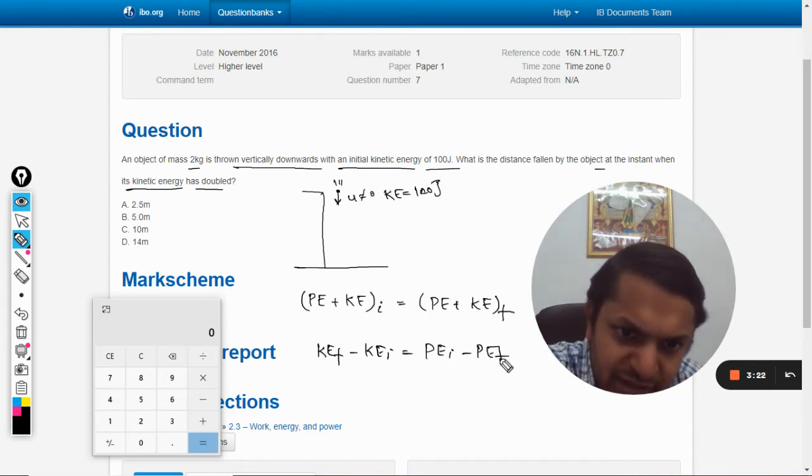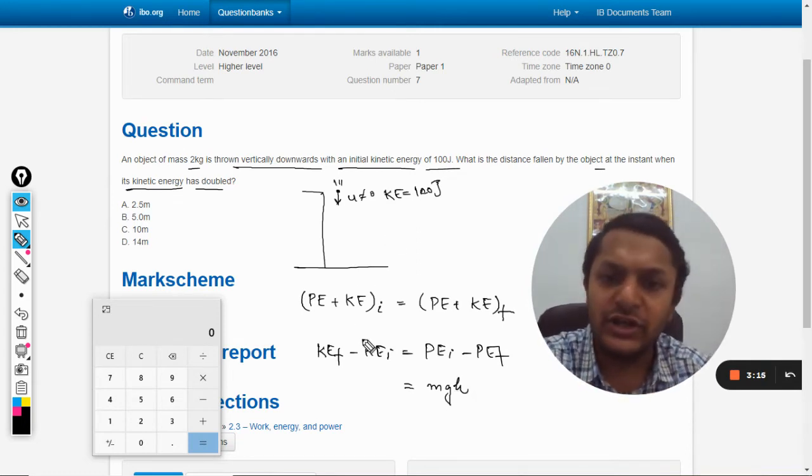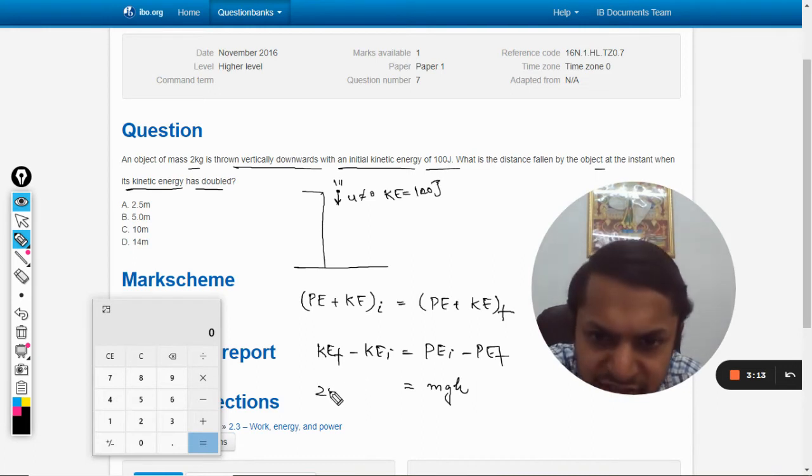So not to unnecessarily complicate it, simple: 100 joule is the total energy. So now this will come out to be 200 minus 100, so 100 is equal to mgh.